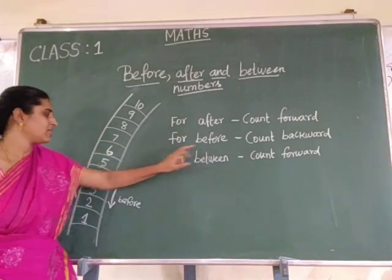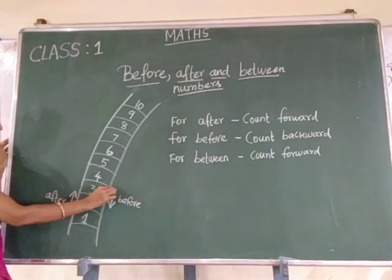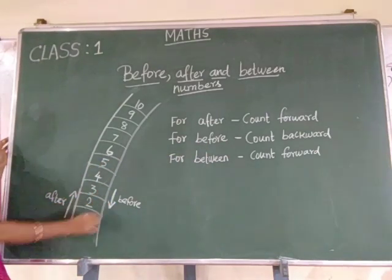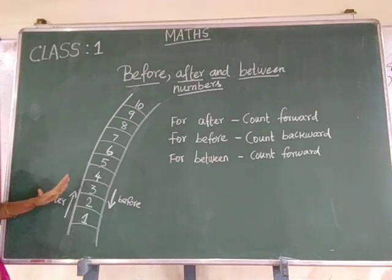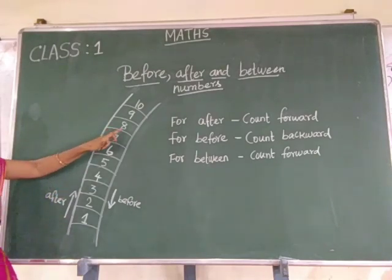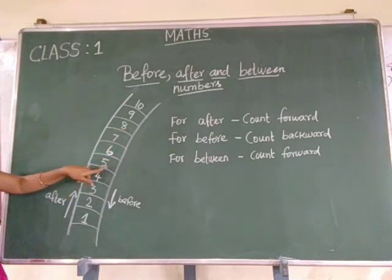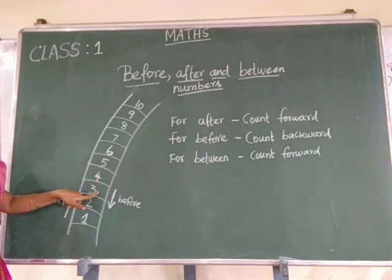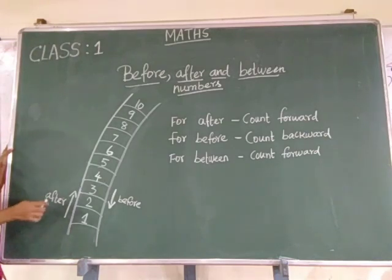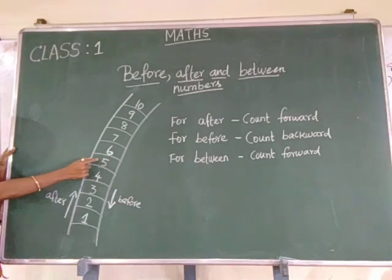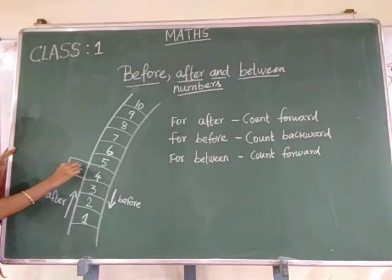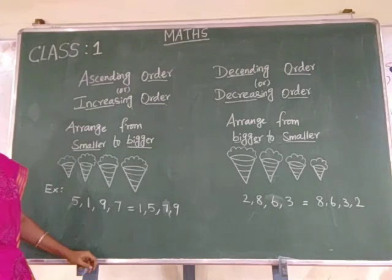To find the before number, you have to go backward in the number ladder. For example, what will come before 8? It's 7. What will come before 4? It's 3. Now tell me, what number comes between 3 and 5? Yes, it's 4.